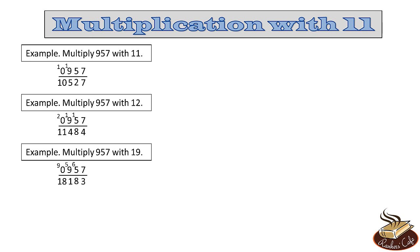Notice how easy this calculation has become — we only need to multiply simple single digit numbers, and this method is very fast. It can be used to multiply any number of any number of digits with numbers from 11 to 19. This brings us to the end of yet another video in the faster calculation series. In the next video, we will learn a very important faster calculation method — multiplying numbers which are near bases. See you then.